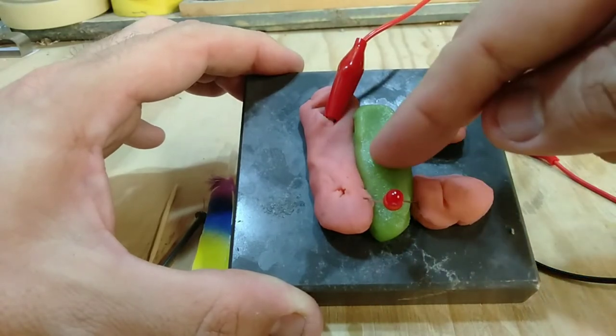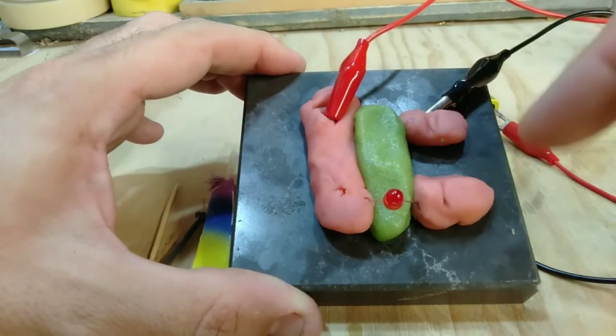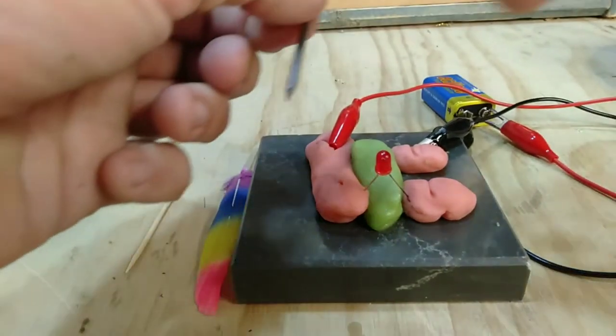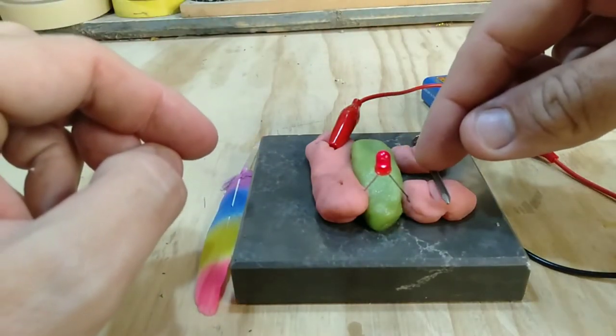So we need to complete the circuit, and we can take something like this metal nail. Now we can lay this metal nail down like so, and if we look, the light comes on because the metal nail completes the circuit. So the nail is a conductor.